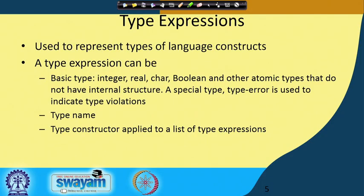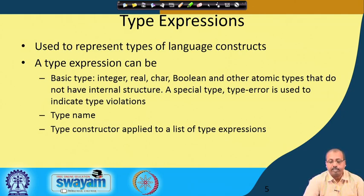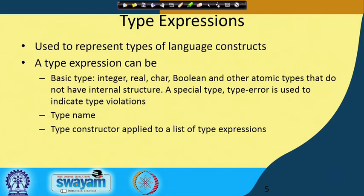Next, we will be talking about type expressions. Type expression, as the name suggests, is an expression involving types. It is used to represent types of language constructs. We will make an expression whose individual elements will be some types, and they will be utilized for representing types of different programming language constructs.